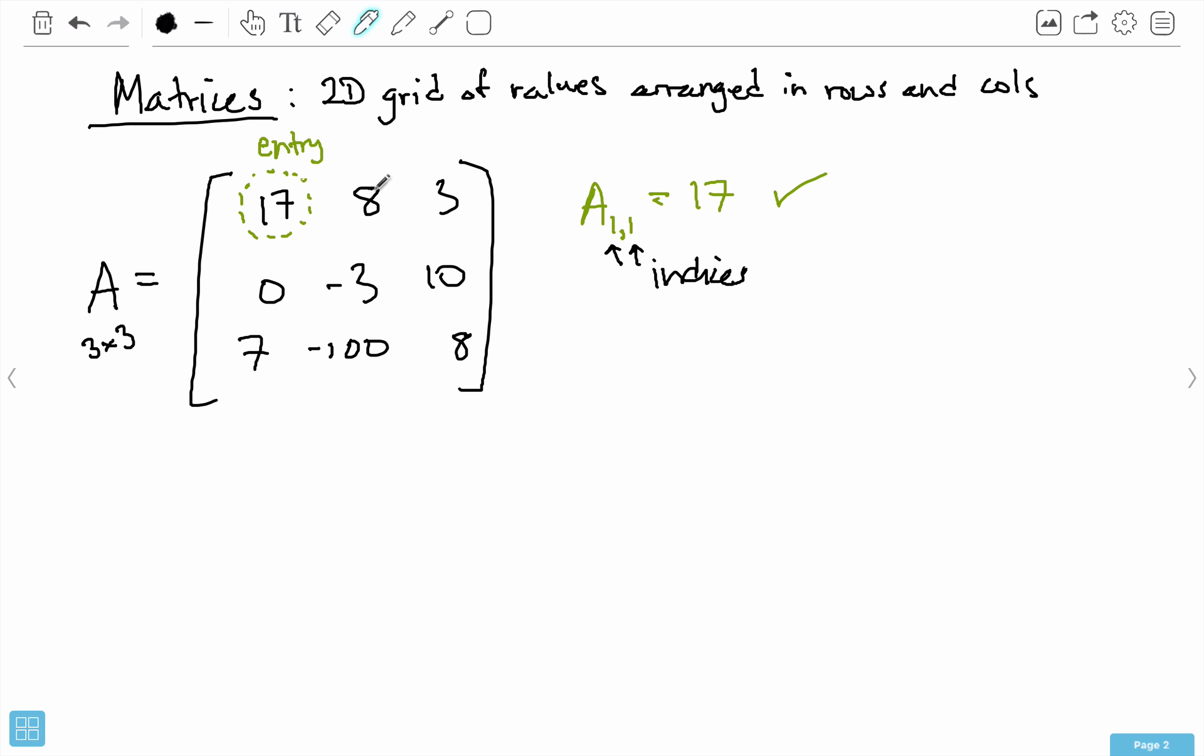This first index refers to the row, and the second index refers to the column. So 1,1 is the first row, first column, which is this entry here.